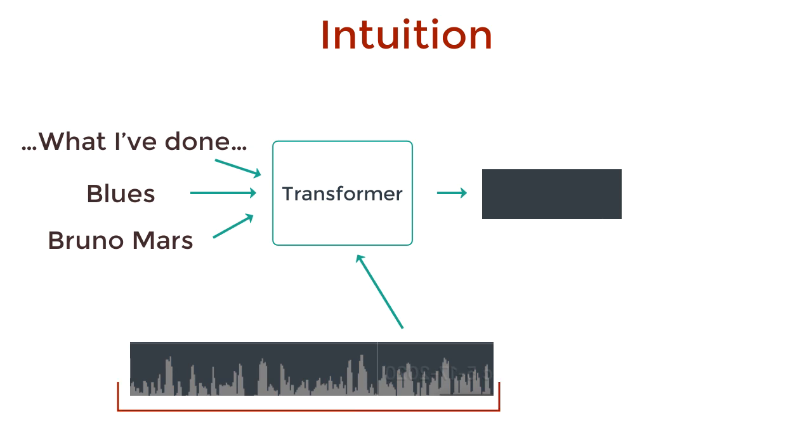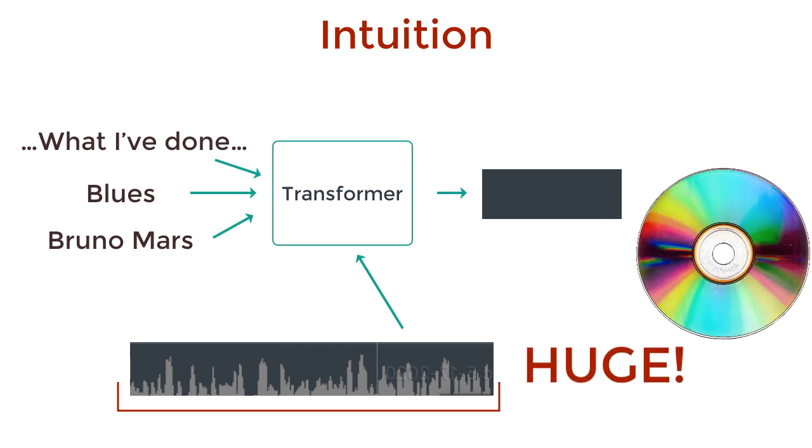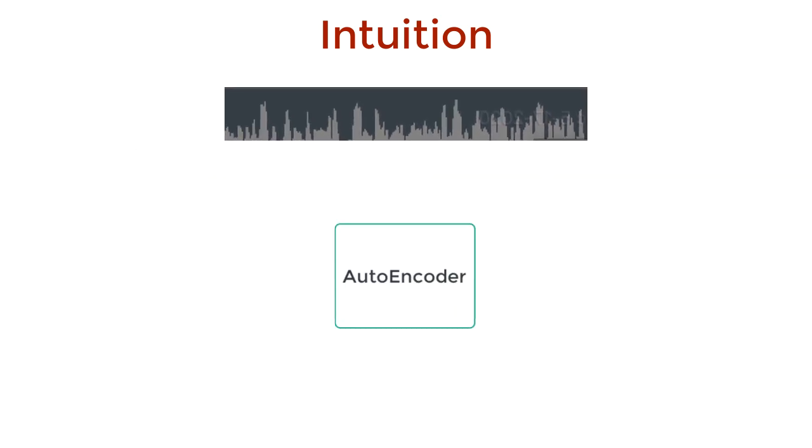This raw audio waveform is huge. You've seen songs on CDs have a sampling rate like 44.1 kHz. That means that we use 44,100 numbers just to represent one second of audio. That's far too big for our model to handle. So we need to compress the waveform while retaining the key aspects of the music. And this compression is done through a type of neural network architecture called an autoencoder.